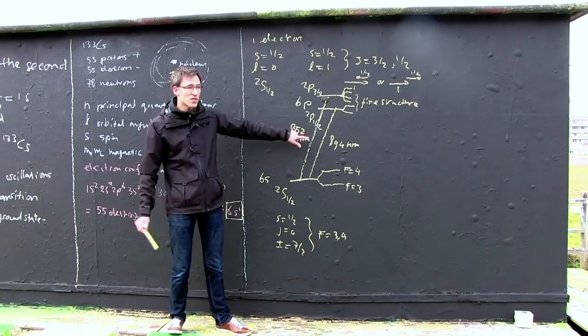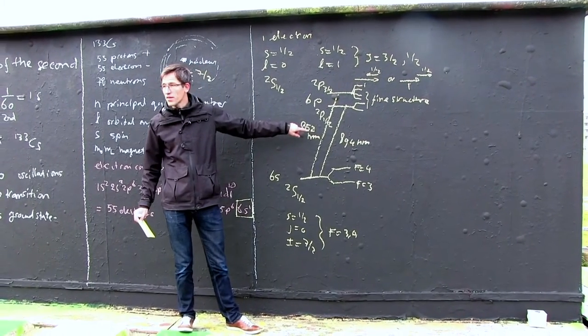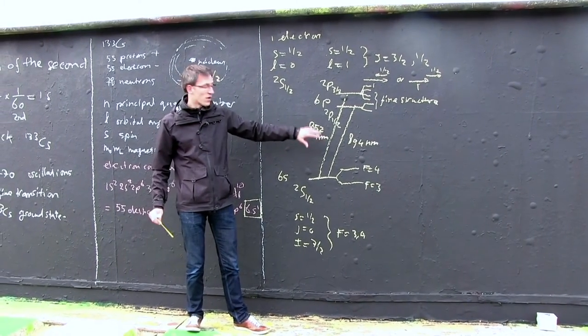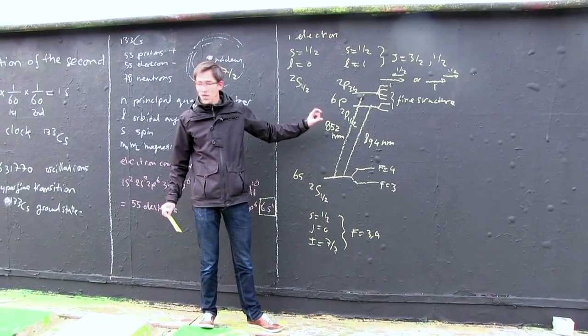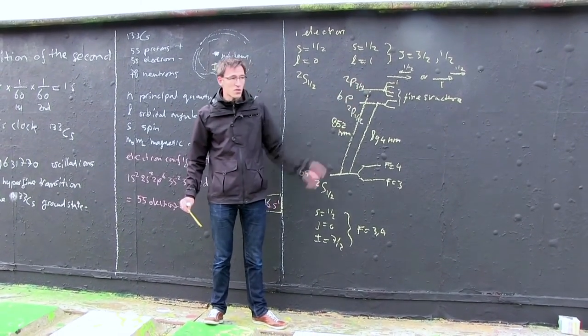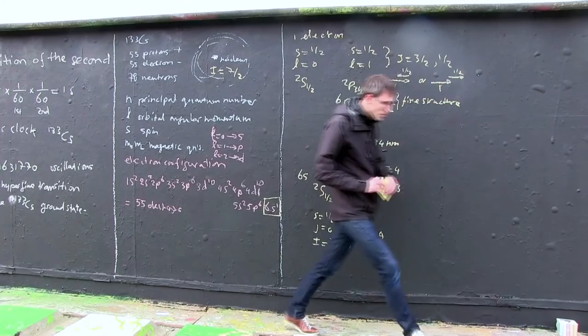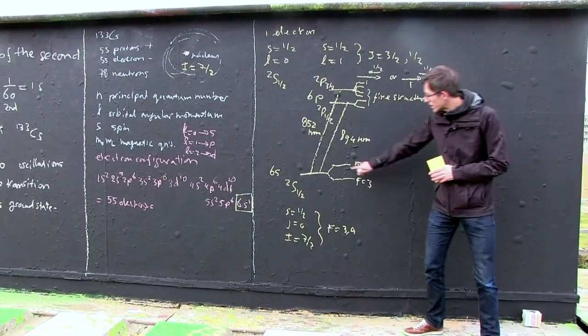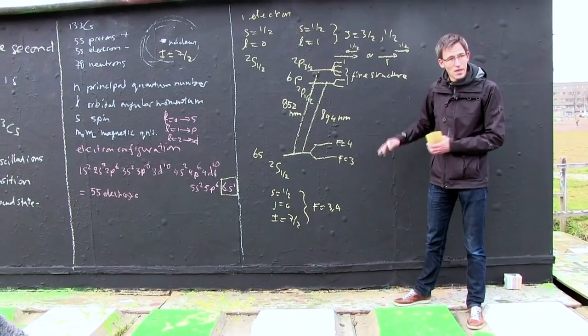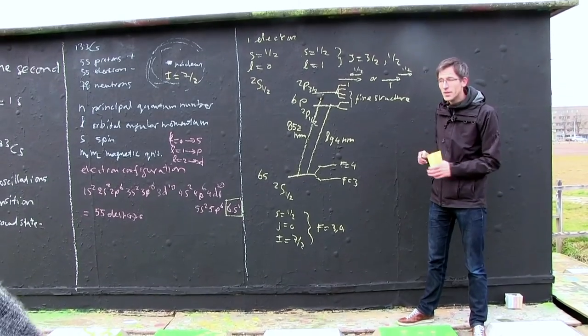So the difference in energy between photons with a wavelength of 894 or 852 nanometers, that's actually the fine structure splitting. Now the hyperfine, you can also make transitions between the hyperfine levels, but that's a much smaller energy, about a factor of 2000 smaller than the fine structure.